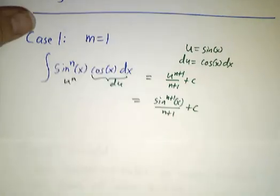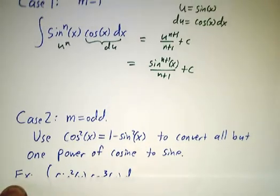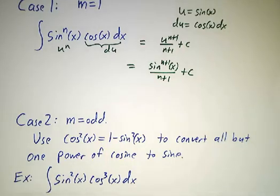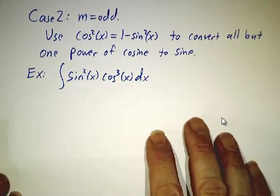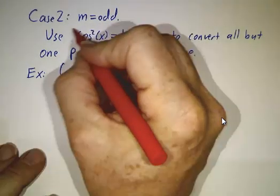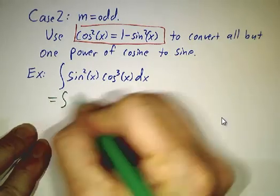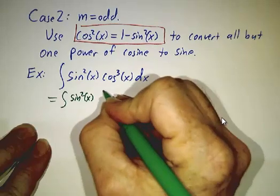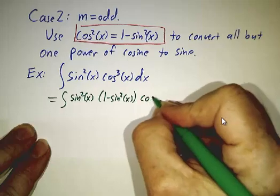The next simplest case is where m is an odd number that isn't 1, like 3 or 5 or 7. Let's do an example with 3 powers of cos. We'd like to have 1 power of cos because we know how to handle that. We can convert 2 cos to a sine using the formula cos squared equals 1 minus sin squared. So we rewrite this as the integral of sin squared of x times 1 minus sin squared of x — that's cos squared — and then we have 1 cosine left.